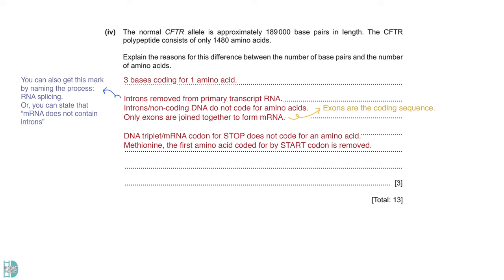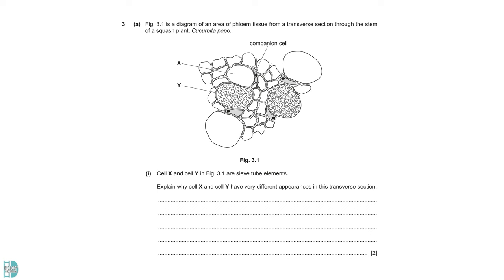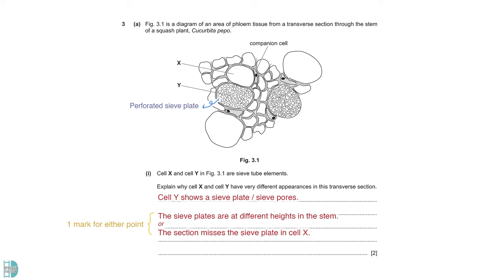There is a mark for AVP. For example, other non-coding regulatory sequences, such as promoters, are present in the gene. Figure 3.1 shows a transverse section through a stem. Question 1 wants you to explain why cells X and Y appear very differently even though they are both sieve tube elements. A sieve plate with many sieve pores can be seen in cell Y. Cell X does not show a sieve plate. The difference is due to their different heights in the stem when the section is taken. The section misses the sieve plate in cell X.